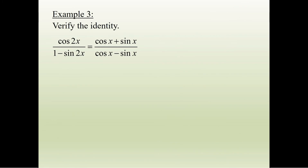Now we get to the point of verifying identities — using what we've learned to simplify. The whole point is to make the left-hand side look like the right-hand side. So we're going to take the left-hand side and start working with it. Cosine 2x is just cosine squared x minus sine squared x, and sine 2x is 2 sine x cosine x, by the double angle formulas.